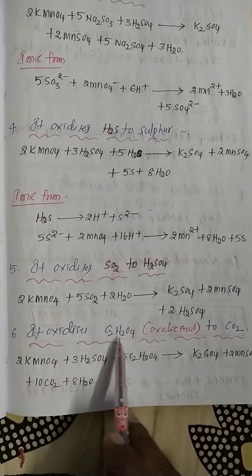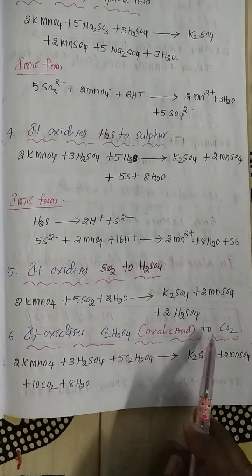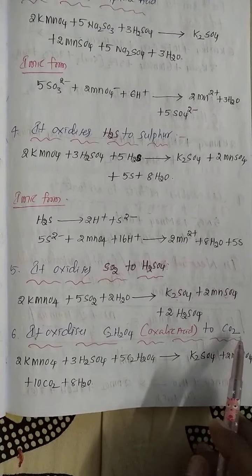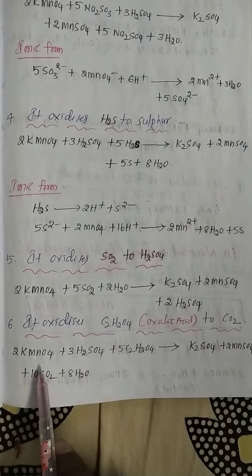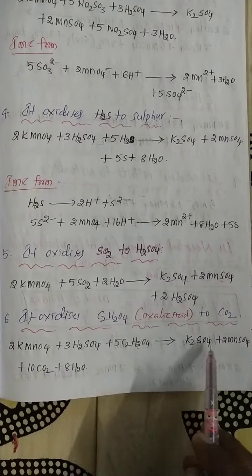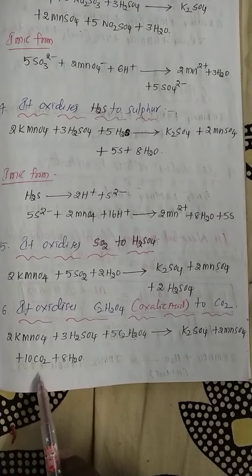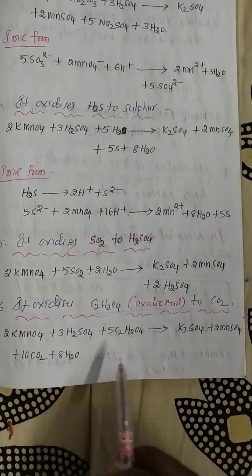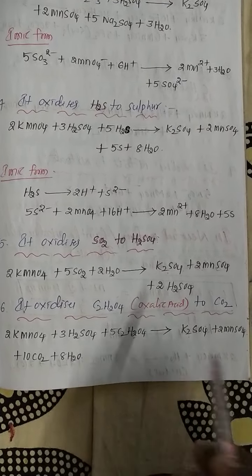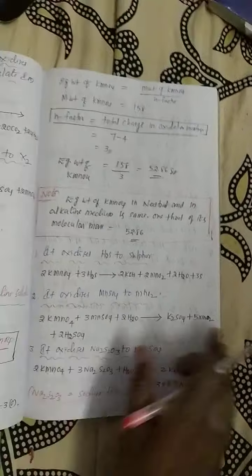The sixth reaction: KMnO4 oxidizes oxalic acid to carbon dioxide. KMnO4 in the presence of sulfuric acid reacts with oxalic acid, converting it to carbon dioxide. The products are K₂SO₄ plus 2MnO₄ plus 10CO₂ plus 8H₂O.